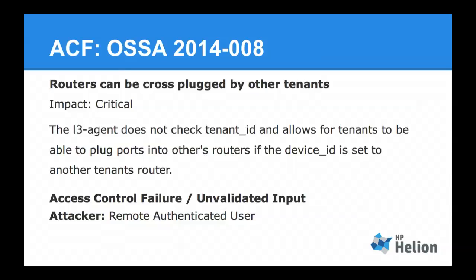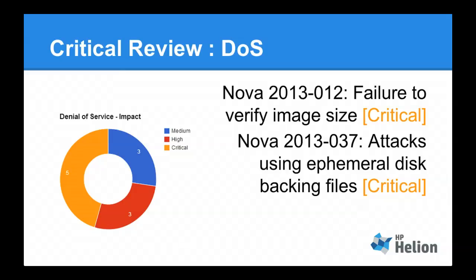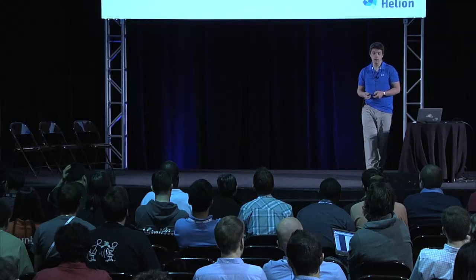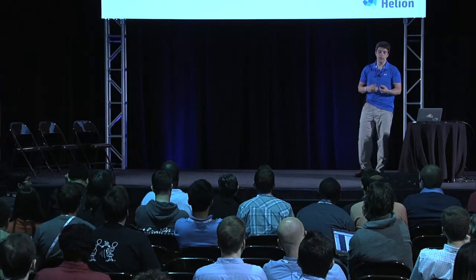2014-18: routers can be cross-plugged by other tenants. Again, this was a problem with too much trust being placed on things happening within the API — an authenticated user could basically just reroute their networking. The denial of service ones are interesting: again, unvalidated input, but instead of APIs, we're talking about files that are provided. QCOW2 images, if they claimed a certain size and got put on disk and started building up, could exhaust the disk, resulting in a denial of service — a result of not validating input to the system.